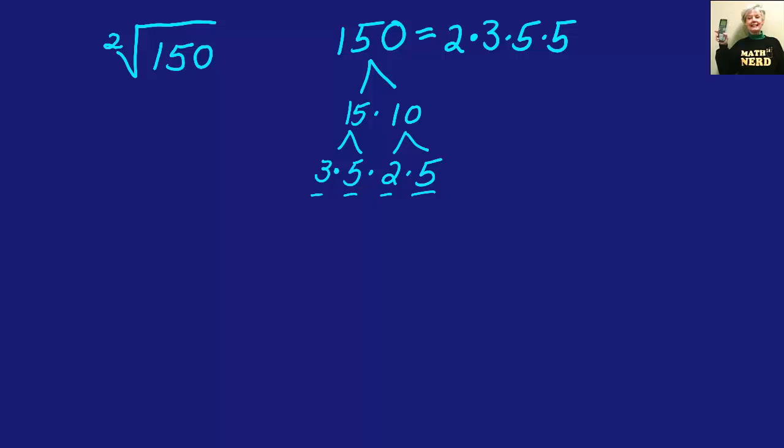Now here is where the index comes into it. The index 2 means that I'm looking for a number that repeats twice. 5 times 5. I take that number 5 and I write it on the outside of the square root radical.